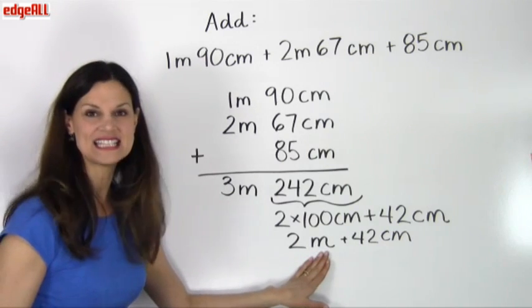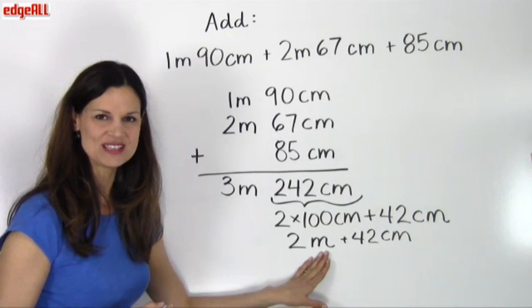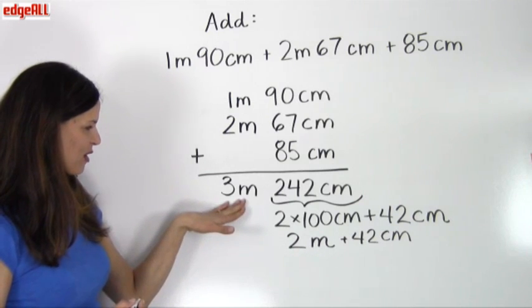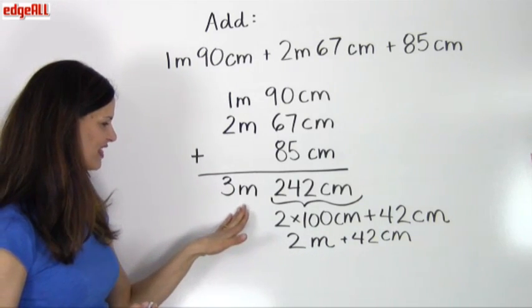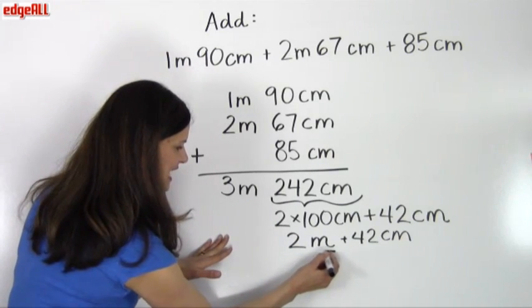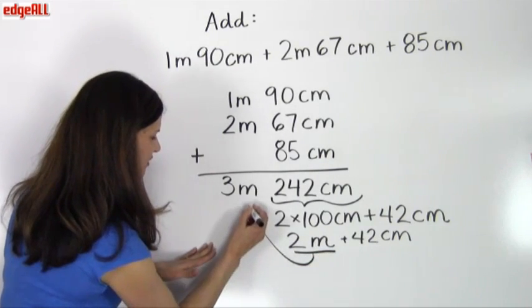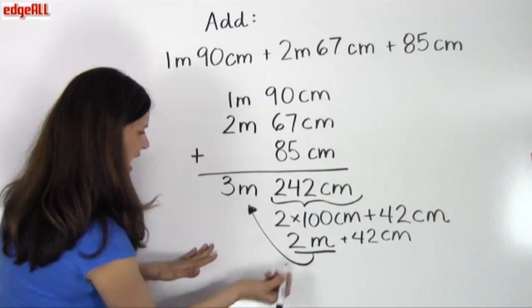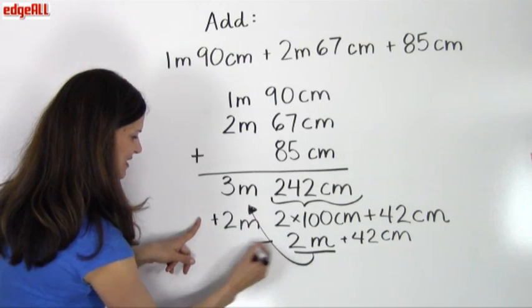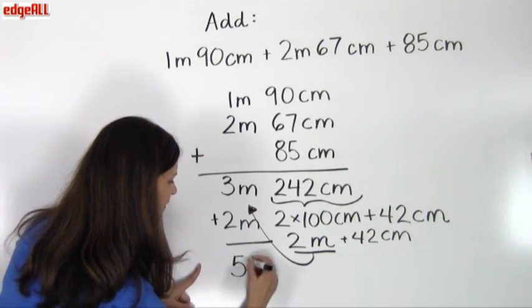So now I'm going to take these 2 meters and I'm just simply going to move them over here to be with this measurement of meters. So I'm going to take this 2 meters and bring it over here with this 3 meters, and I'm going to add 3 meters plus 2 meters, which equals 5 meters.